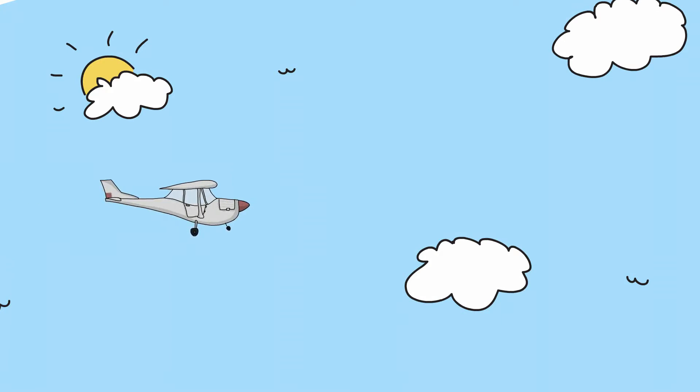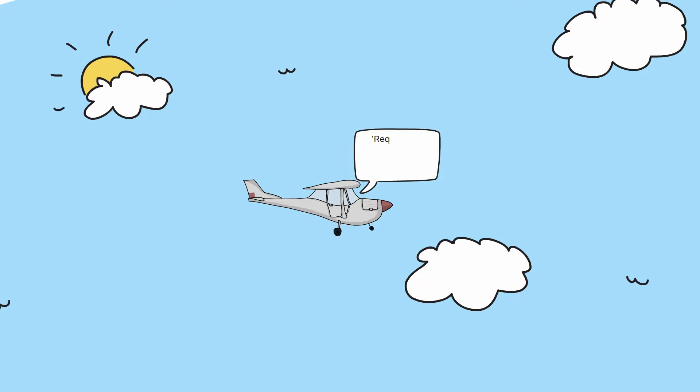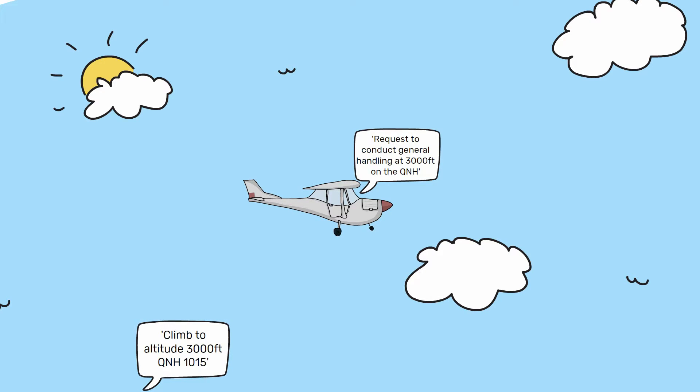Now that you are safely in the air, you instruct air traffic control that you wish to conduct some general handling at 3000ft on the QNH. The air traffic controller will reply with something along the lines of: climb to altitude 3000ft, QNH 1015. Similarly, the word altitude is used because it is expected that you will begin to climb to 3000ft on the QNH.